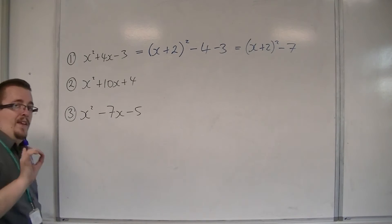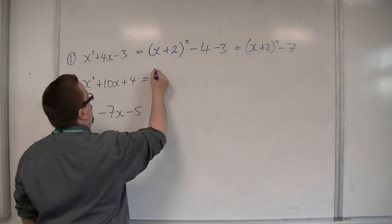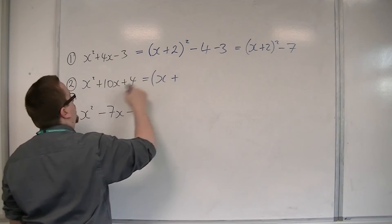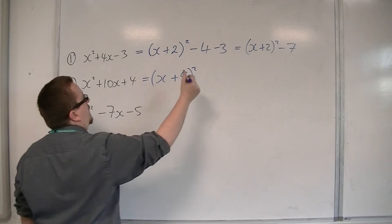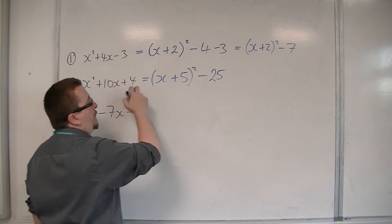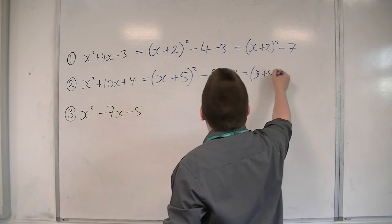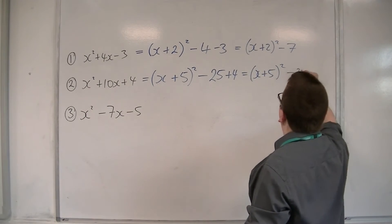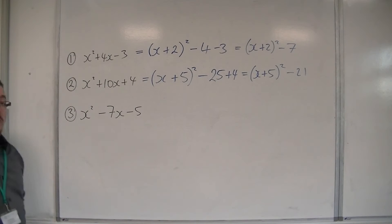So let's see it quicker in this second example. So I'm going to have x plus half the 10 squared take away the square of that number. And I've still got that plus 4. So I get x plus 5 all squared take away 21. So that's the second one.